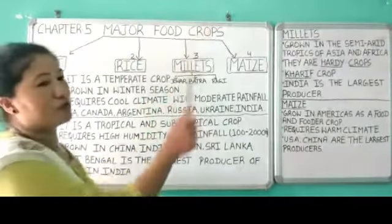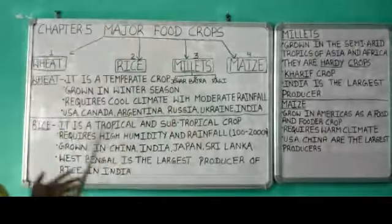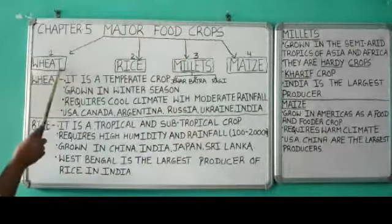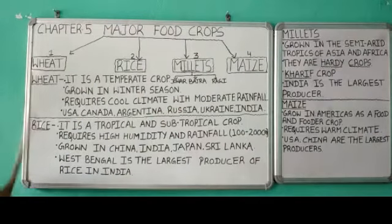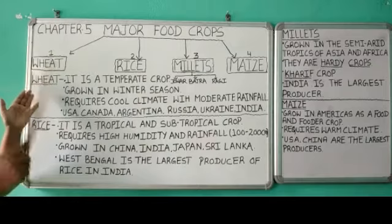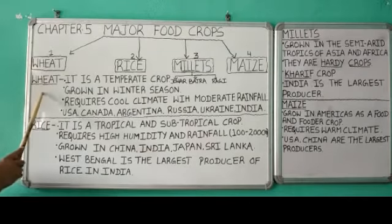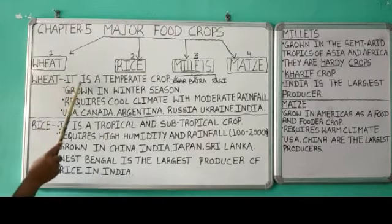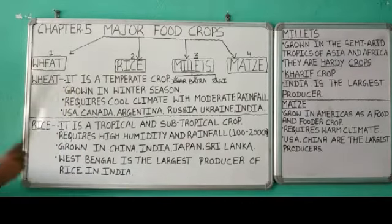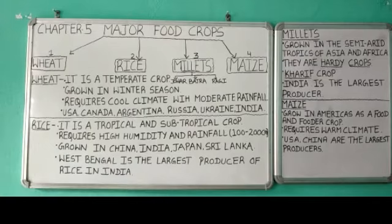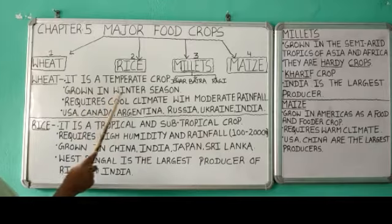The major food crops grown in the world are wheat, rice, millets, and maize. The first food crop is wheat. Point number one: it is a temperate crop, meaning it grows in temperate countries, and we can see it in the mid-latitude regions.